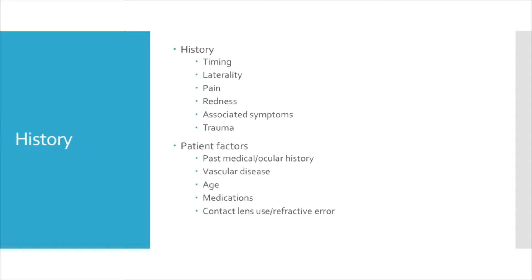Trauma can also cause a globe rupture. Past medical and ocular history can give important clues to the etiology of vision loss as well. Previous surgeries can predispose to endophthalmitis, uveitis, or retinal detachment. Certain medical diseases can give clues to suggest certain causes of acute vision loss.